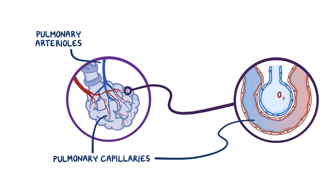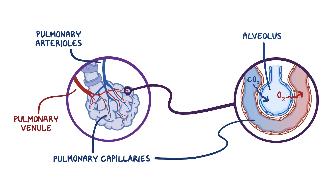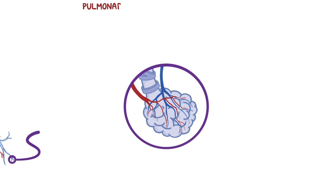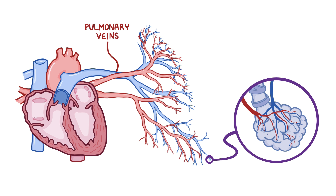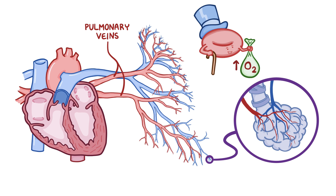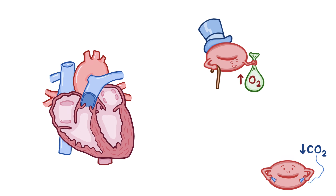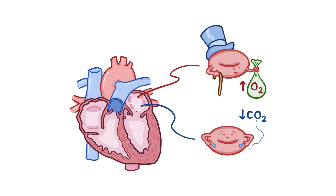At that point, oxygen enters the blood and carbon dioxide enters the alveoli. The pulmonary capillaries drain into small veins known as pulmonary venules that flow into two pulmonary veins exiting each lung, and these pulmonary veins complete the circuit by delivering oxygen-rich and carbon dioxide-poor blood into the left atrium, which flows into the left ventricle and then into the aorta where it enters systemic circulation.